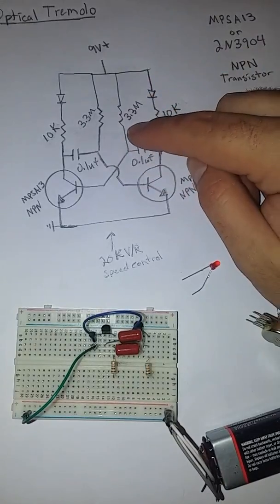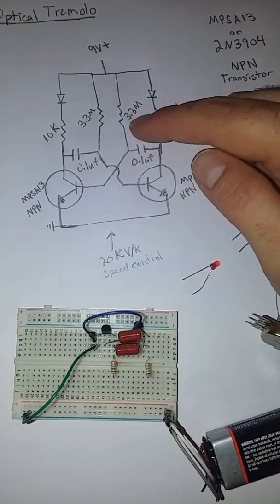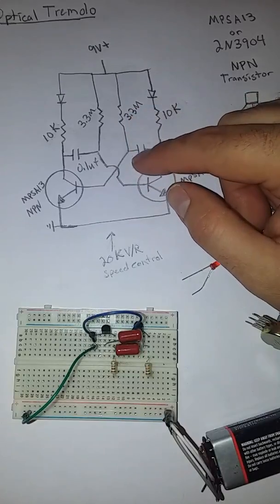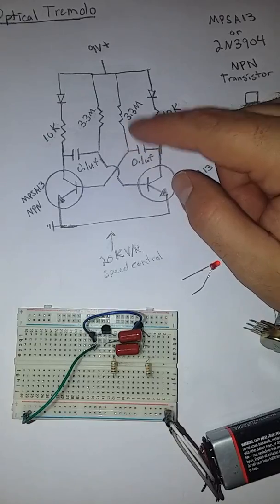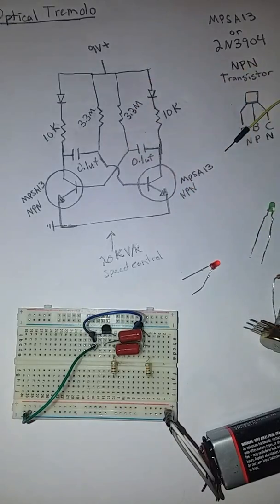Now I'm using the 3.3 meg depending on how fast you want your flashing light to go. You can use anywhere from a 1 meg to a 10 meg. 1 meg would give you the fastest speed whereas a 10 meg would give you the slowest.